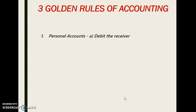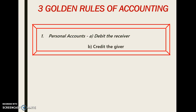As per the first golden rule of accounting, in case of personal account: debit the receiver and credit the giver. That is, when a person receives something, that person's account will be debited in books of account, and when a person gives something, we will credit that person's account in books of account.